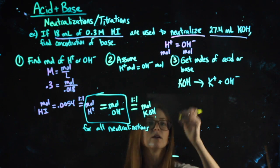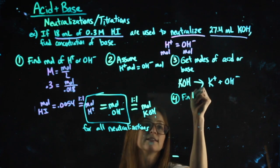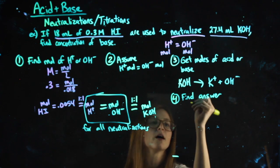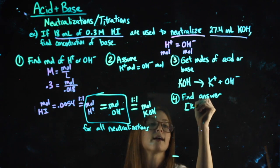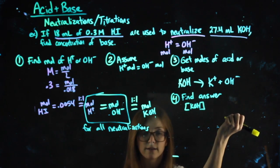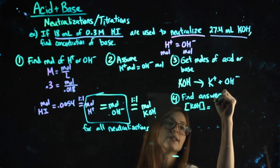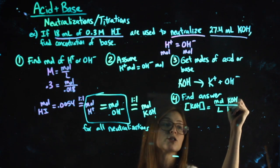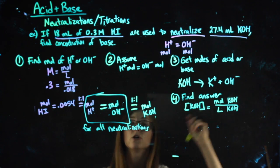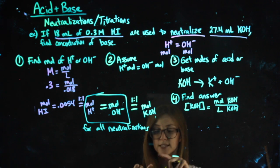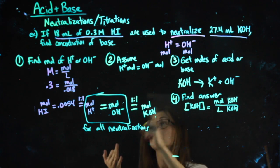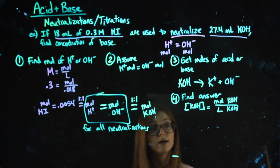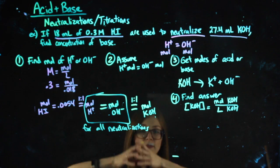And then step four, is going to be to find the answer. In this case, they want the concentration of the base. They want the KOH molarity. Molarity of KOH is going to be my moles of KOH over my liters of KOH. You're used to using total volume for acid plus acid, for base plus base. For the other acid plus base that we did earlier today, you've always used total volume. But in this case, we know that when they're combined, it's neutral.